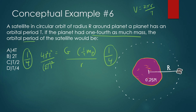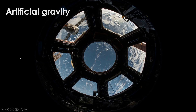So the period would increase by a factor of 2, becoming 2T. That makes intuitive sense: if the planet becomes less massive, there's less gravitational force, the satellite moves slower, and the period is longer. There are a lot of questions like this on the AP exam where you're asked to manipulate variables and see how changing one affects the others. Thanks for watching — see you in the next one on artificial gravity.